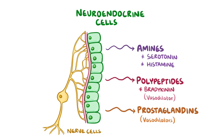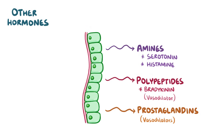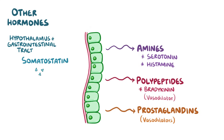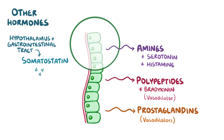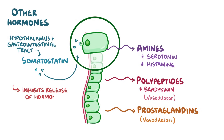The production of these hormones can be regulated by other hormones. So for example, somatostatin is a hormone that's made by cells in the hypothalamus, as well as the gastrointestinal tract, and it travels through the blood and binds to the receptors on the surface of neuroendocrine cells. Binding of somatostatin then inhibits the release of a number of hormones from neuroendocrine cells, including serotonin.